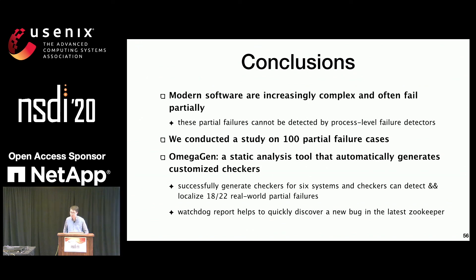Martin Poole from Google asked: does the tool still require reproducing the hang or problem during testing to make it more obvious, or does it actually help reproduce the rare problem? The speaker clarified: the goal of the tool is not to reproduce the failure or expose non-failures in testing, but during runtime of the deployed system execution, to monitor and detect partial failures inside the process. The tool helps quickly localize where the bug is when there is a failure going on.